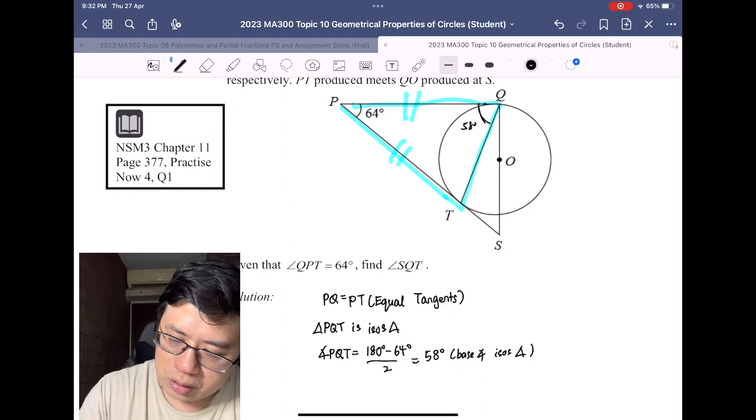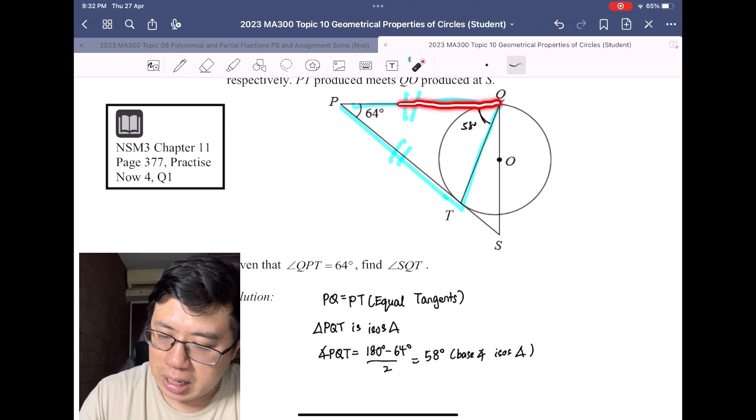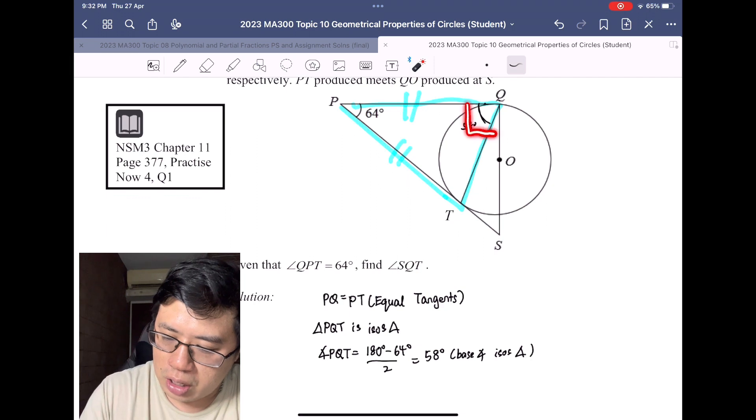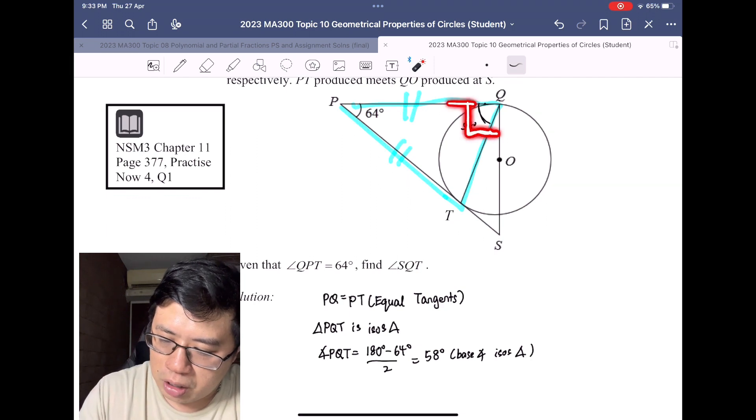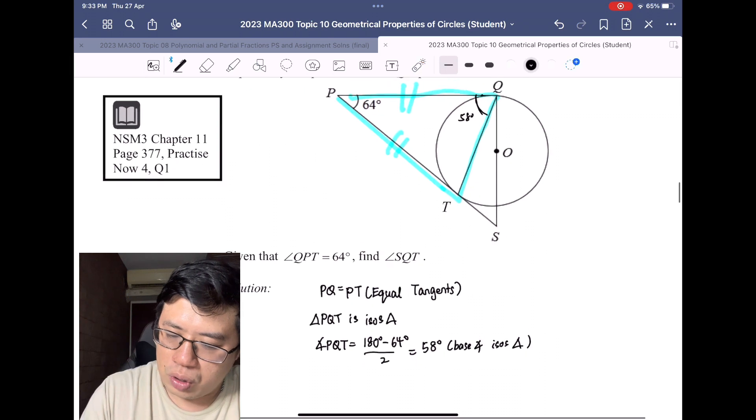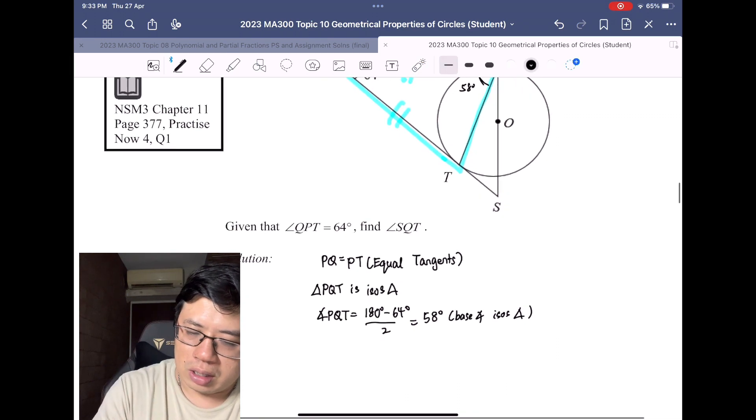At the same time, we notice that we see a tangent here. Tangent perpendicular to radius, so angle PQO will be equal to 90 degrees.